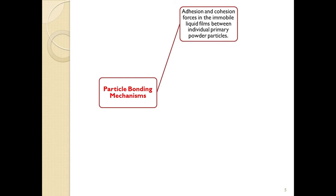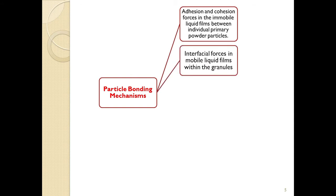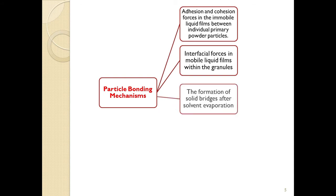Particle bonding mechanisms are of five types. The first reason is adhesion and cohesion forces in immobile liquid films between individual primary particles — 'immobile' is an important word here, meaning the liquid film is stationary around the particle. The second reason is interfacial forces in mobile liquid films, which also leads to particle bonding.